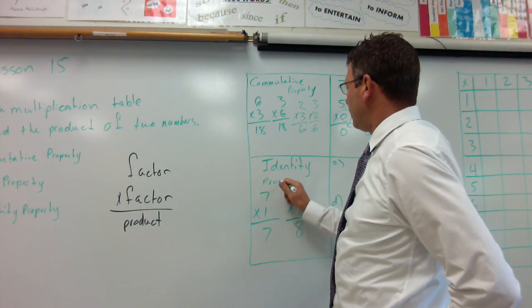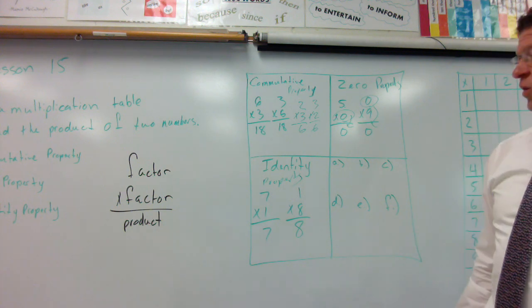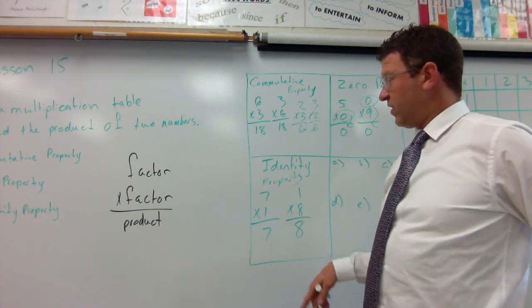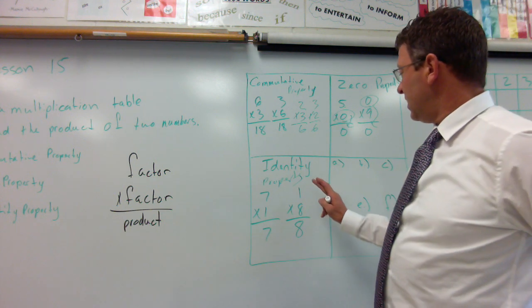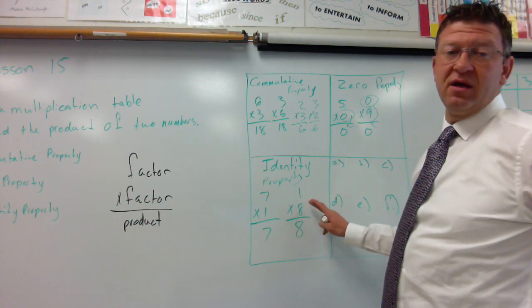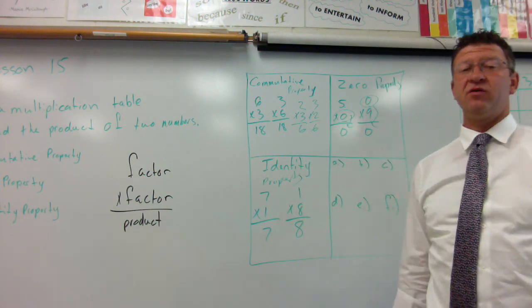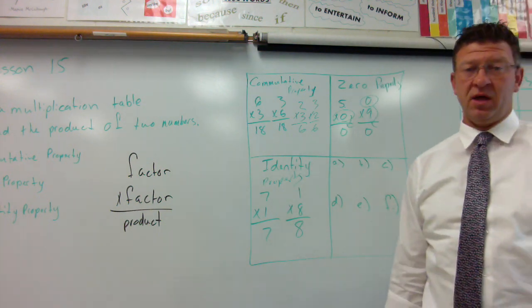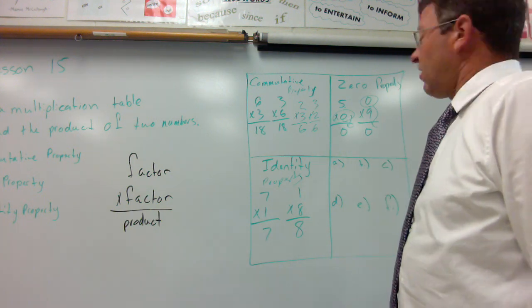The identity property. This is the one like you look in the mirror. You're a number, you take yourself times one, you look in the mirror, you see yourself. Any number times one is itself. One times nine is nine, one times ten is ten, one times eleven is eleven, one times twelve is twelve, one times one million is one million. Any number times one is itself.